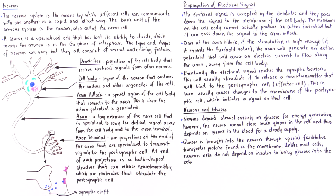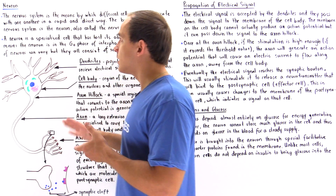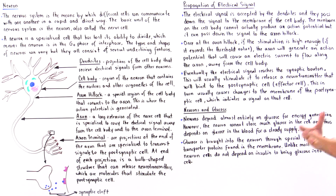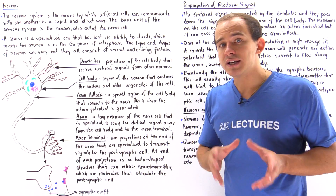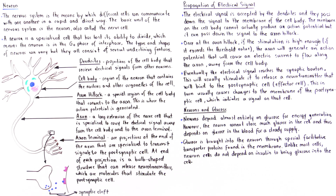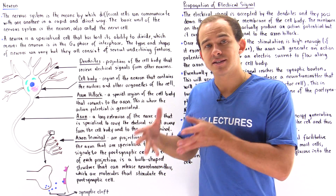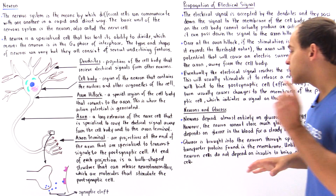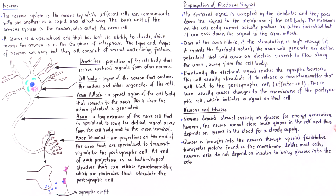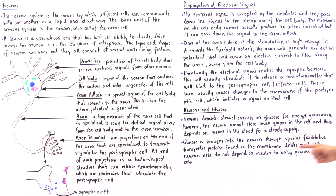The final important aspect of a neuron I want to mention is the energy source it uses. Neurons depend almost entirely on glucose for energy generation. However, the neuron cannot store much glucose in the form of glycogen inside the cell, and it cannot store much oxygen inside the cell either. This means the neuron depends on glucose and oxygen found in the blood for a steady supply.